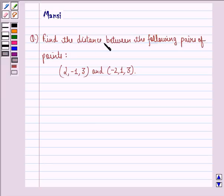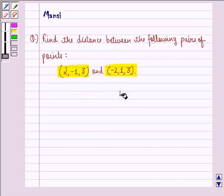The question says, find the distance between the following pairs of points, that is 2, minus 1, 3 and minus 2, 1, 3.